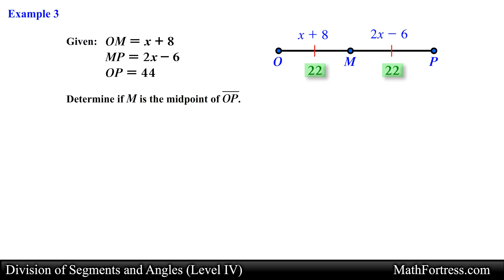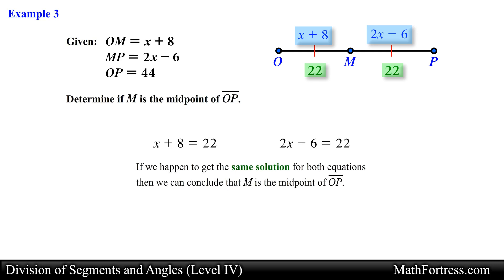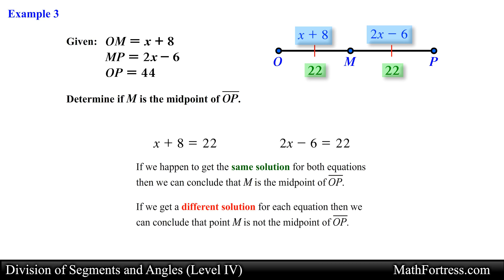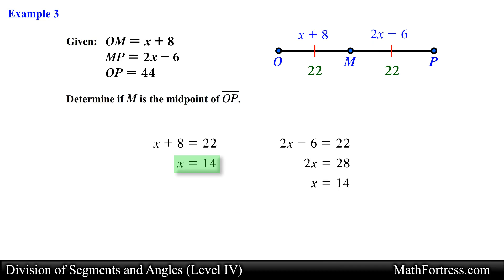We set 22 equal to each algebraic expression and solve for x. If both equations yield the same value of x, then M is the midpoint; if they give different values, it is not. Solving for x in each equation, we obtain x equals 14 for both equations. Therefore, point M is the midpoint of segment OP since the same value of x satisfies both equations. This is our final answer.